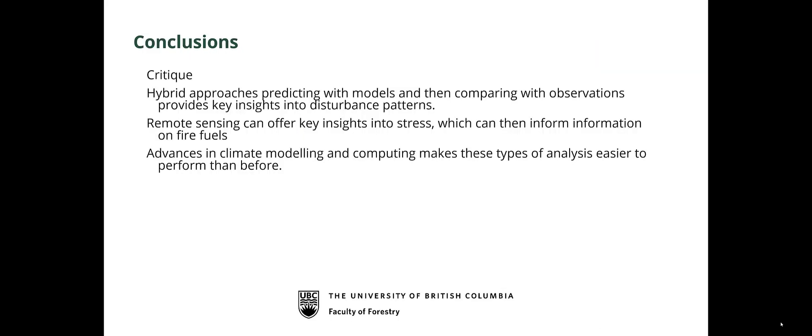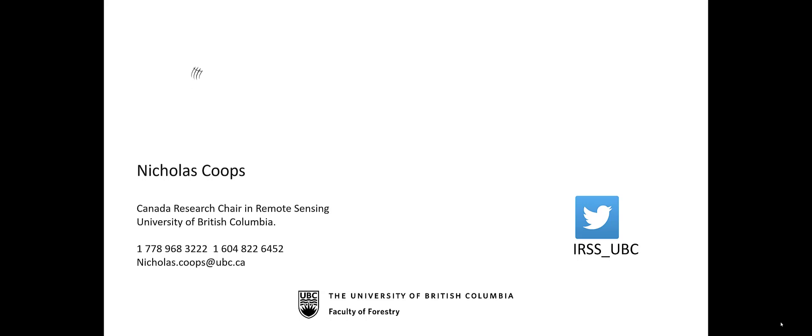In summary, these hybrid approaches using models and comparing them with satellite observations allow us to get key insights into what's happening in the landscape. We've focused on disturbance patterns visible from space: remote sensing can detect stress, and physiological models help us understand what's causing it, for example drought, which is a key indicator that might inform upon fire risk. I can be reached at nicholas.coops@ubc.ca if you'd like to follow up and get copies of papers that summarize this work. Thank you very much for listening.